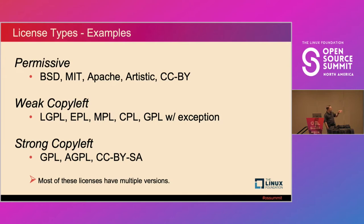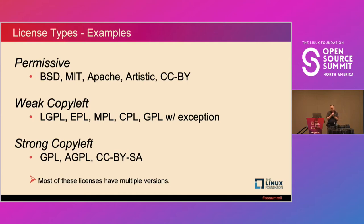Other weak copyleft licenses include the Eclipse Public License, Mozilla Public License, Common Public License, and GPL with exception. Under strong copyleft is the standard GPL license — the most common versions in use today are GPL v2 and GPL v3. You'll often see GPL licenses say 'you can use this code under GPL v2 or later,' meaning you can apply any later version. One very notable exception is the Linux kernel, which is under GPL v2 only — you cannot redistribute it under a different version of the GPL.